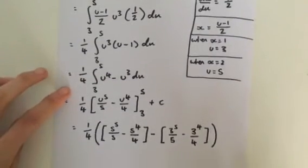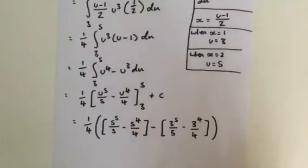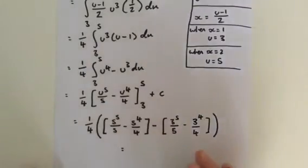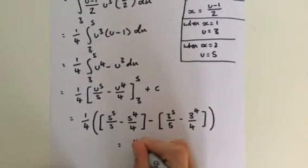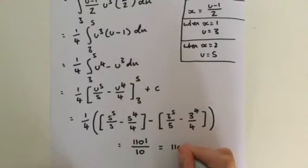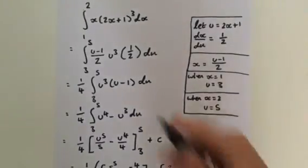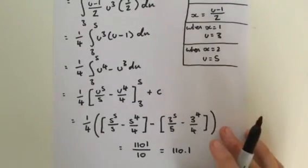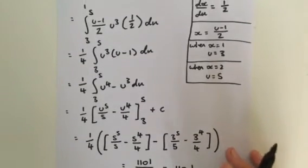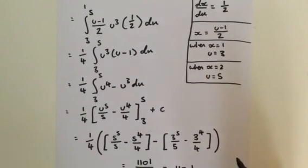Using a calculator, the integral of x times 2x plus 1 to the power 3 between the limits 1 and 2 gives 1,101 divided by 10, which is 110.1. So if this was in centimetres, from 1 cm to 2 cm, the area under that curve is 110.1 centimetres squared. In the next video, I'll look at the last two examples of integration by u-substitution, where I'll look at limits involving trigonometric functions. See you in that video.